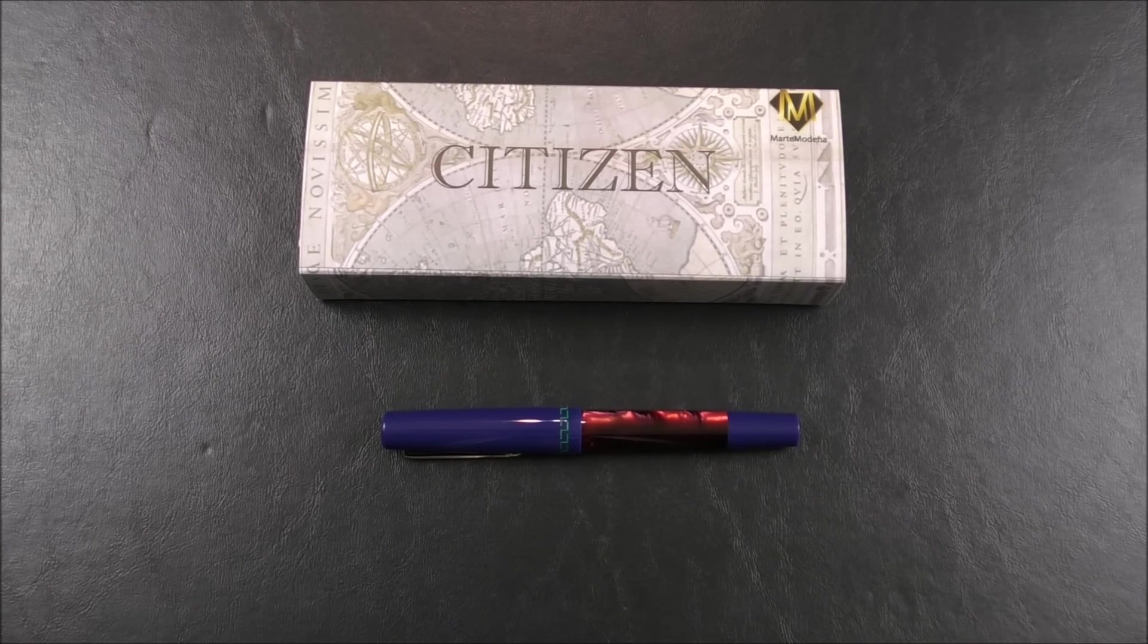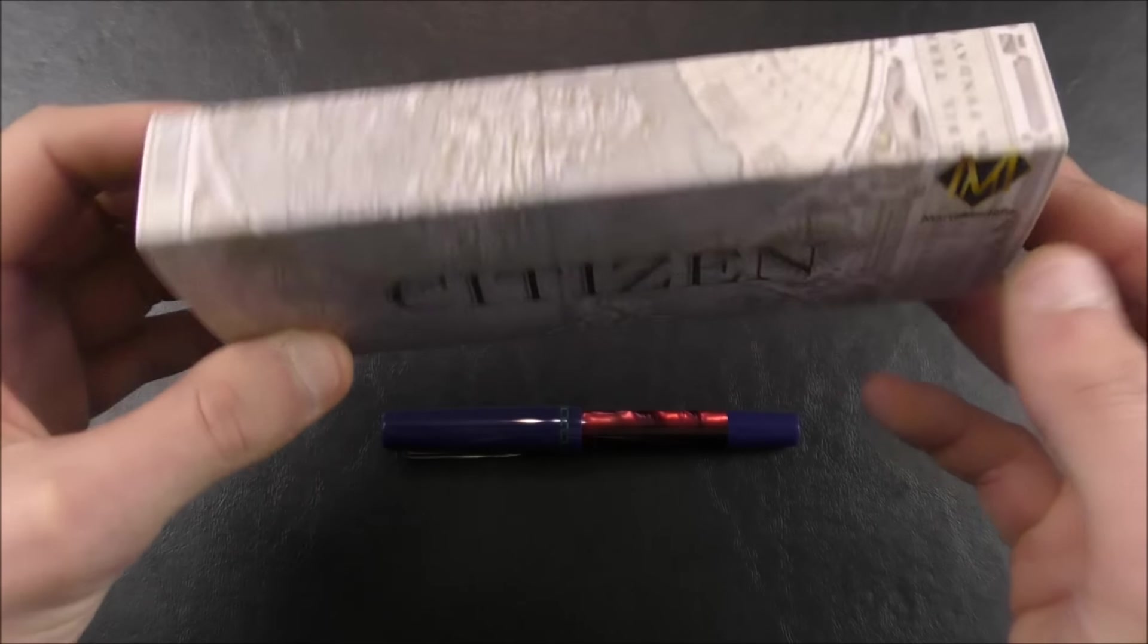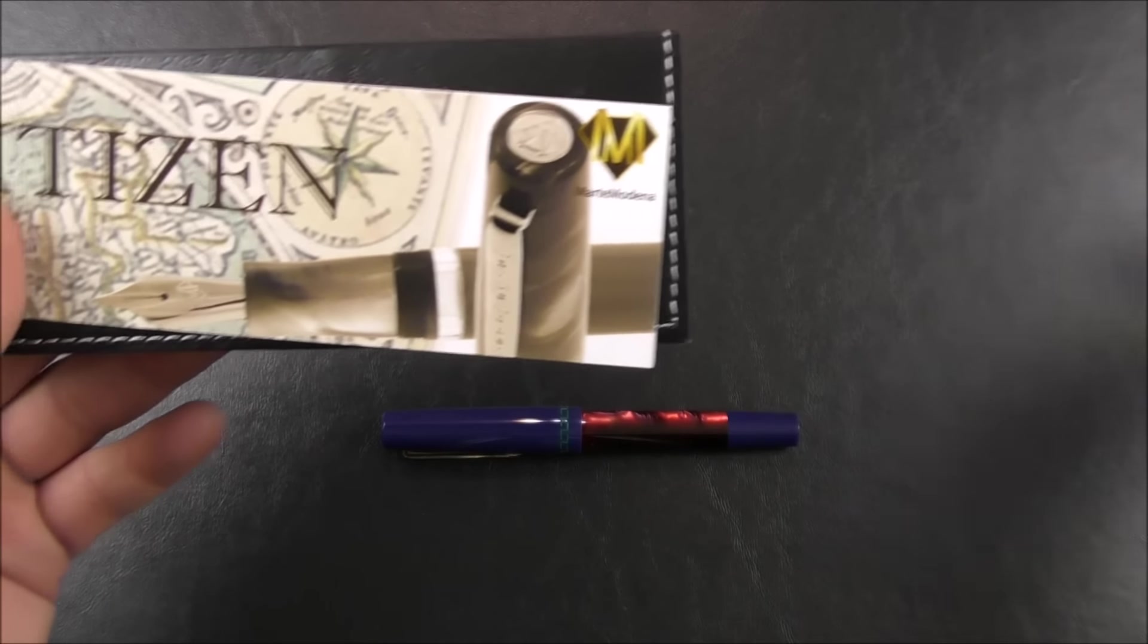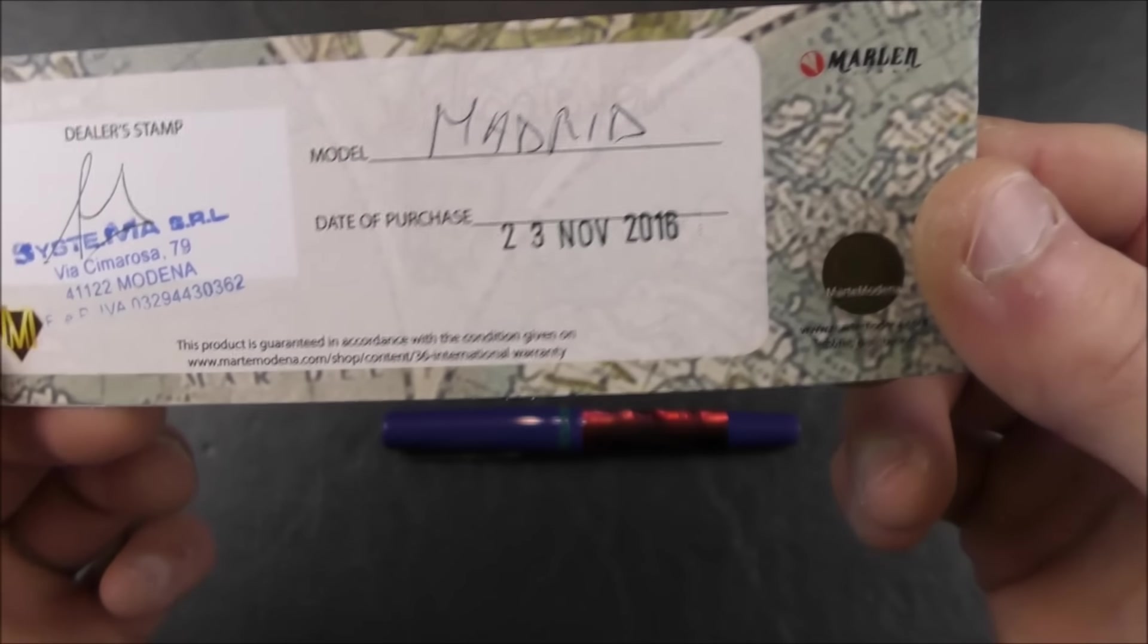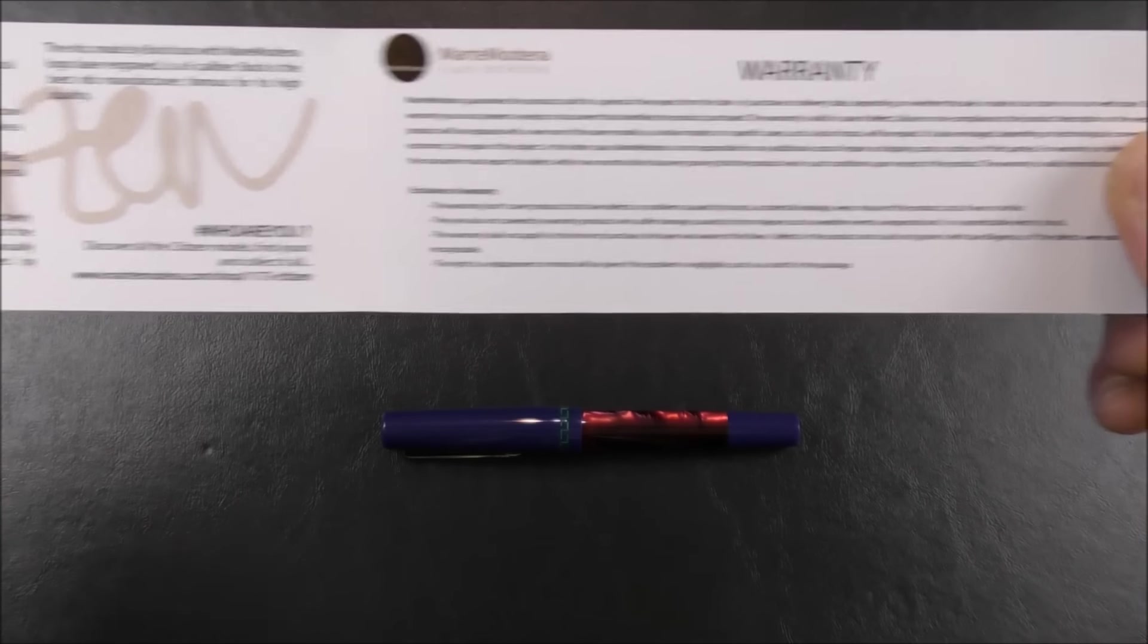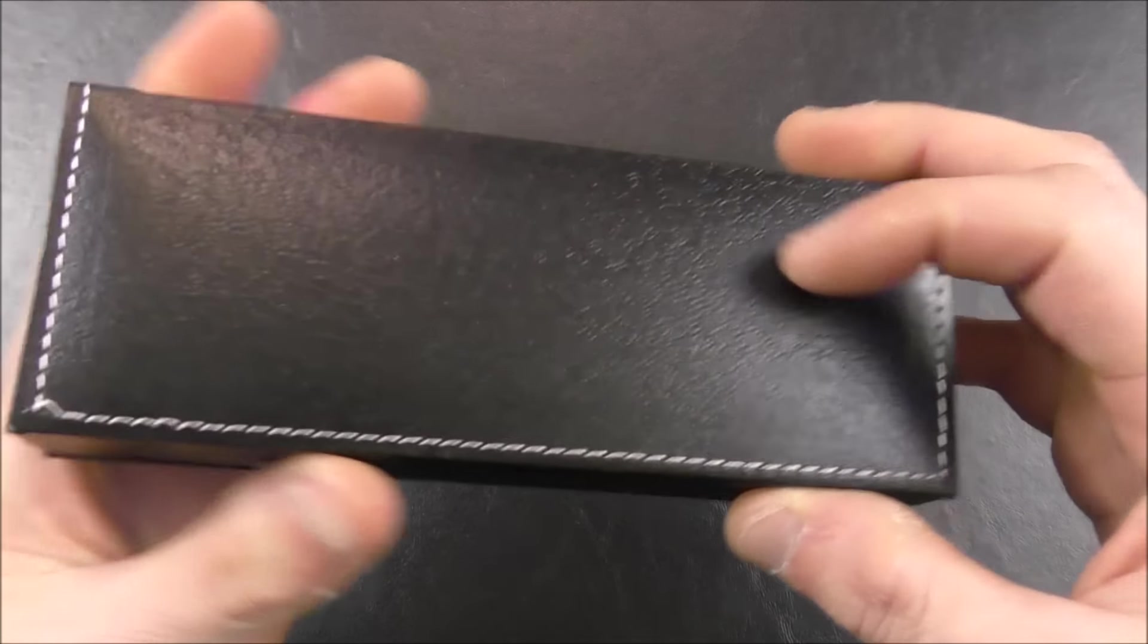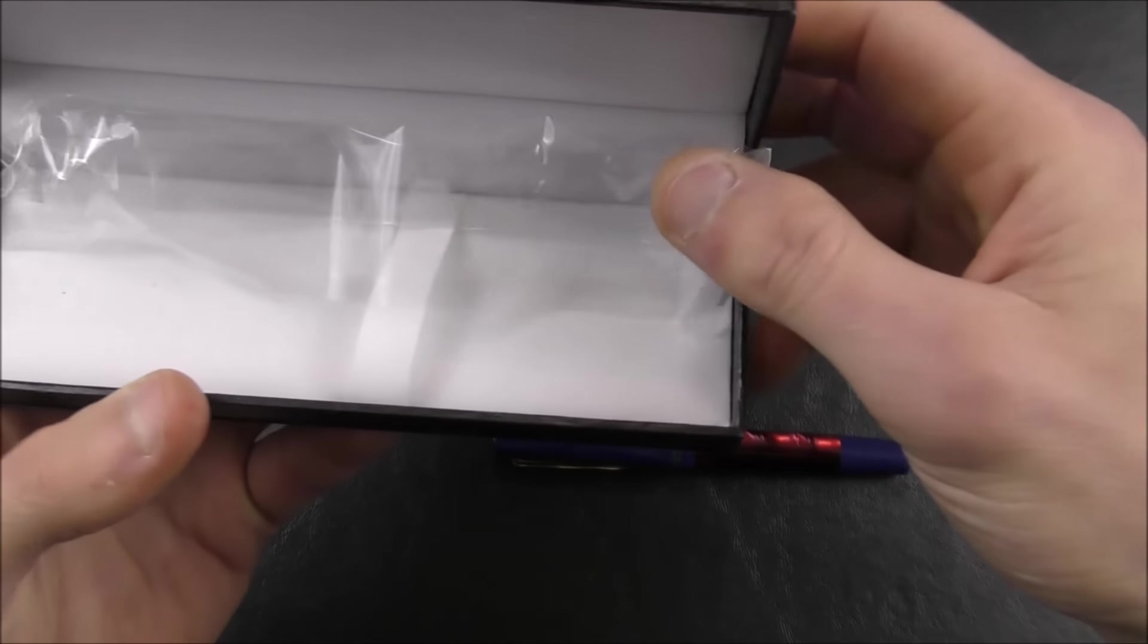The Marte Modena Citizen comes packaged like this. You have a sleeve showing the international nature of this pen line. You have information here on the back showing the dealer's stamp, the model, the date of purchase, information about the collection, a little bit about the warranty. It is a two-year warranty, by the way, and some instructions. Then you have this leatherette case. You open it up, and of course the pen would be inside, so not bad for presentation.